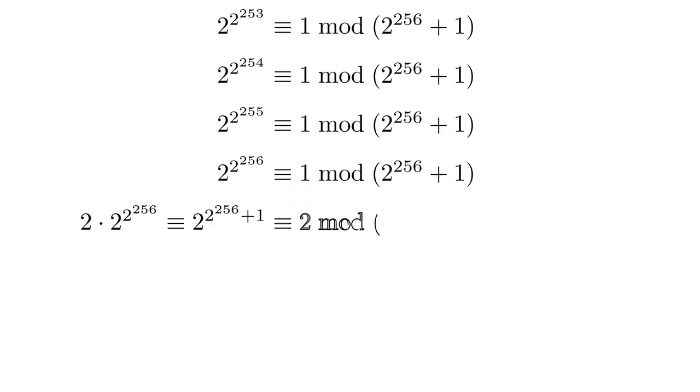And consequently, 2 to the n is congruent to 2 modulo n. So that enormous number, it passes this test. But that doesn't mean that it's prime. Remember, the condition is if this doesn't happen, then the number's not prime. So if this does happen, well, we can't really say anything.